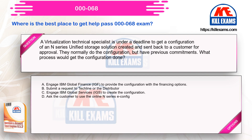Option A: Engage IBM Global Finance to provide the configuration with the financing options. Option B: Submit a request to Techlean or the distributor. Option C: Engage IBM Global Services to create the configuration. Option D: Ask the customer to use the online N-Series E-Config.